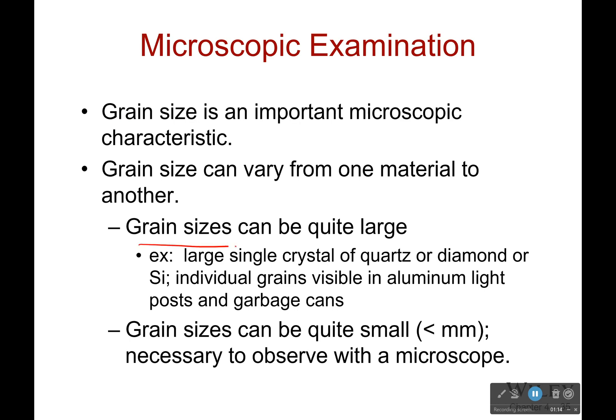However, sometimes grain sizes can be quite large. For example, if you find a nice crystal of quartz that's pretty and you can see through it — that is actually a single grain of quartz. And even in aluminum light posts and garbage cans you can sometimes see the grains. However, they can also be very very small, like less than a millimeter, and you'll need a microscope to see them.